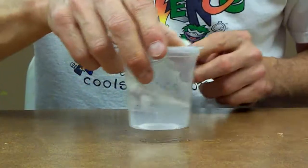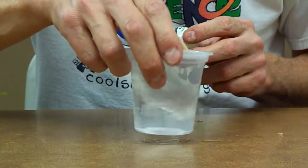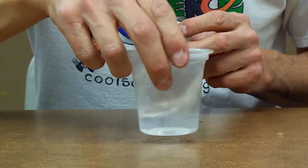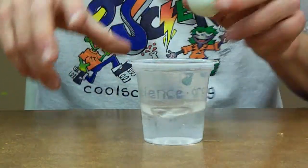But we can change that shape by swirling it, and then the ping pong ball will fall to the bottom of the bowl.